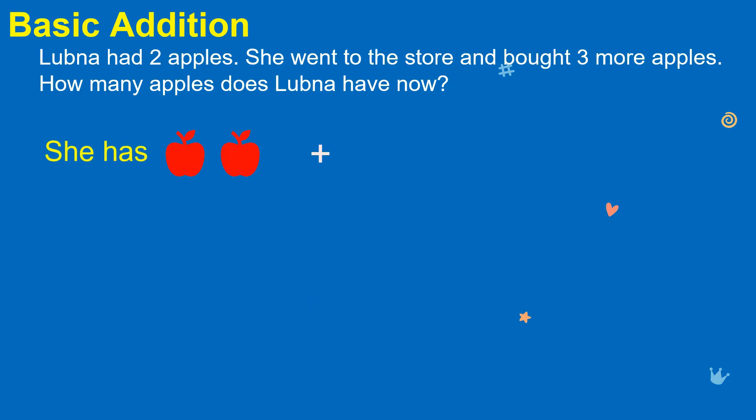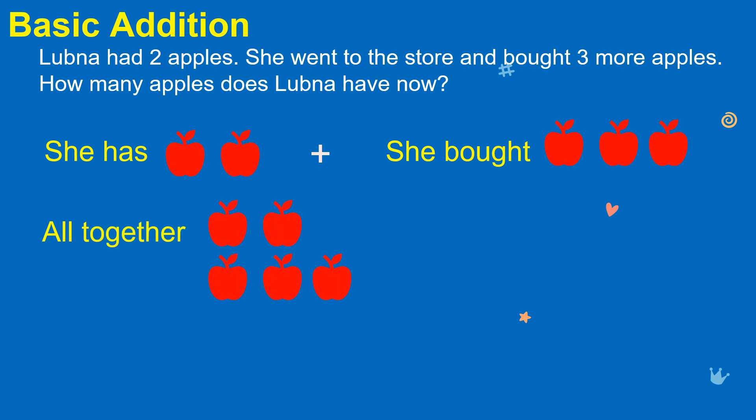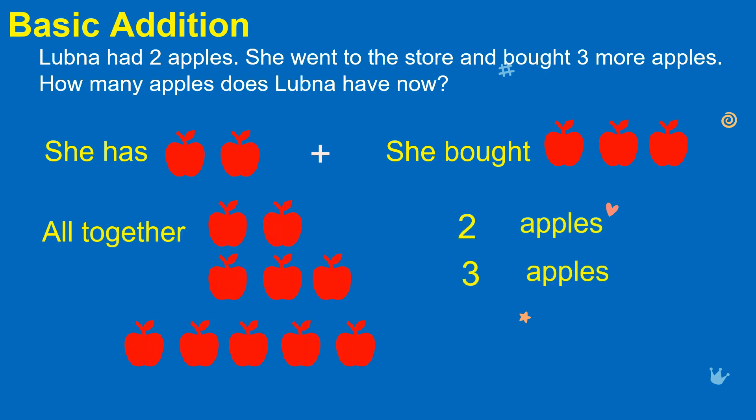Lily has two apples. She buys three more apples. To find out how many apples she has in total, we add the numbers together. So, two apples plus three apples equals five apples. Lily now has five apples in total.